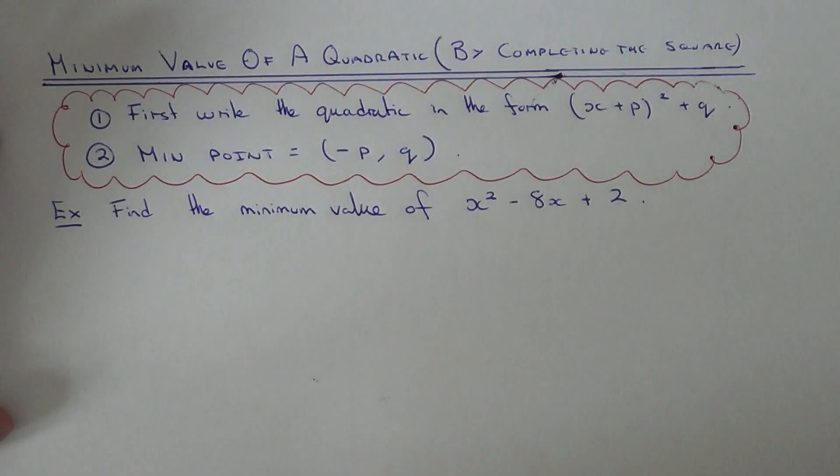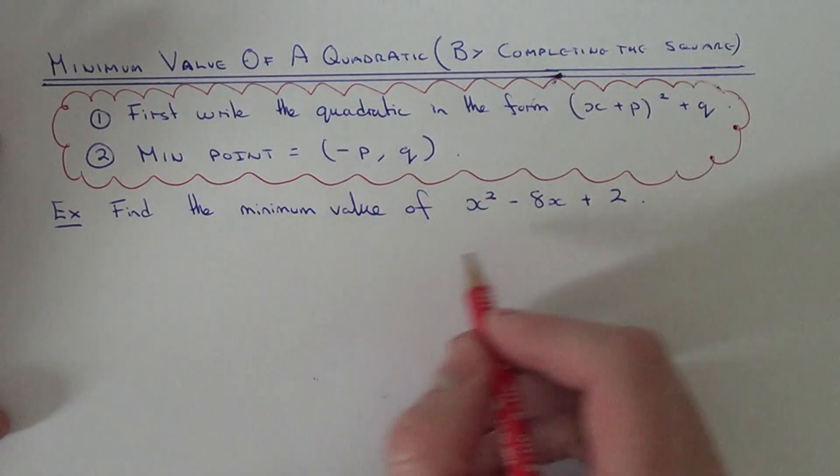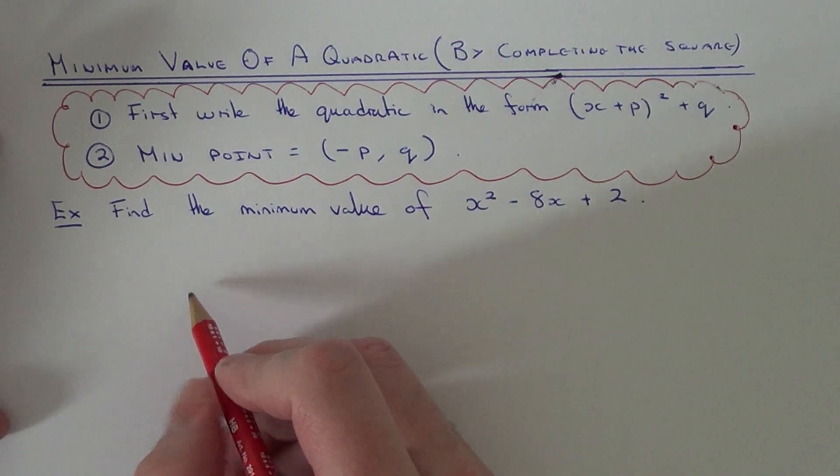So let's have a look at an example. We've got to find the minimum value of x squared minus 8x plus 2. So the first thing we need to do then is complete the square on this quadratic.